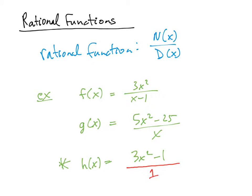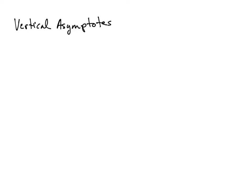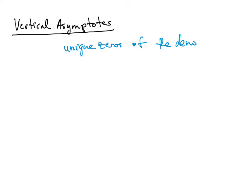In this video, we're specifically going to be going over how to graph rational functions. To do that, we need to discuss asymptotes. The first asymptote to cover is a vertical asymptote, and a vertical asymptote is simply what values make the denominator 0 — these are the unique zeros of the denominator. Not every rational function will necessarily have a vertical asymptote, but many of them will.